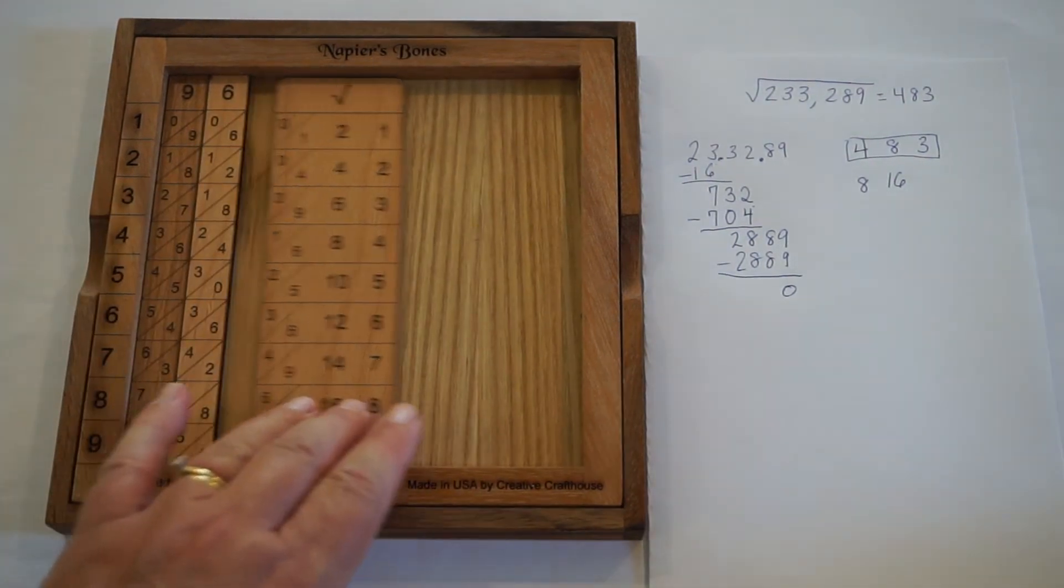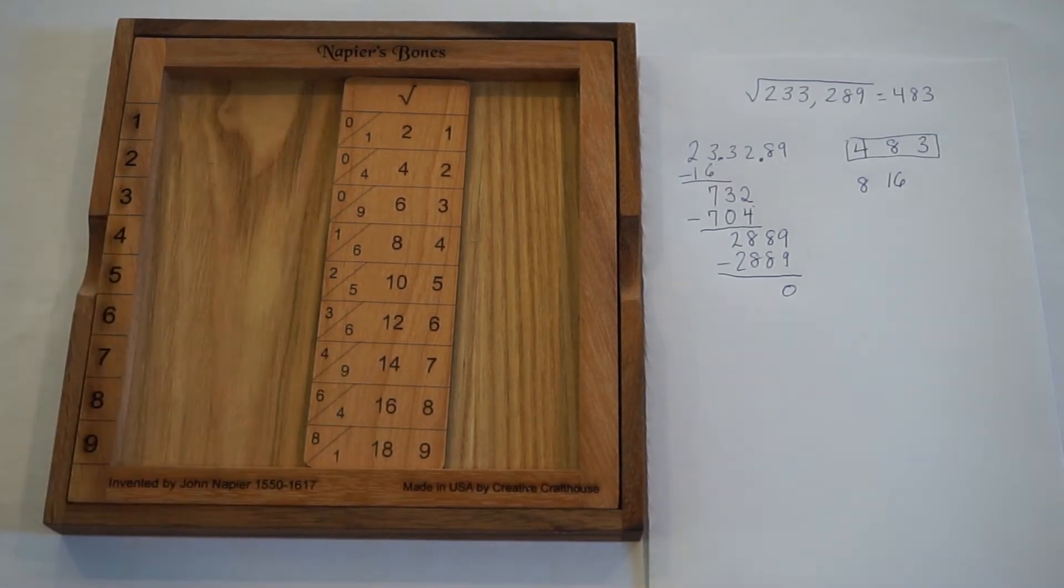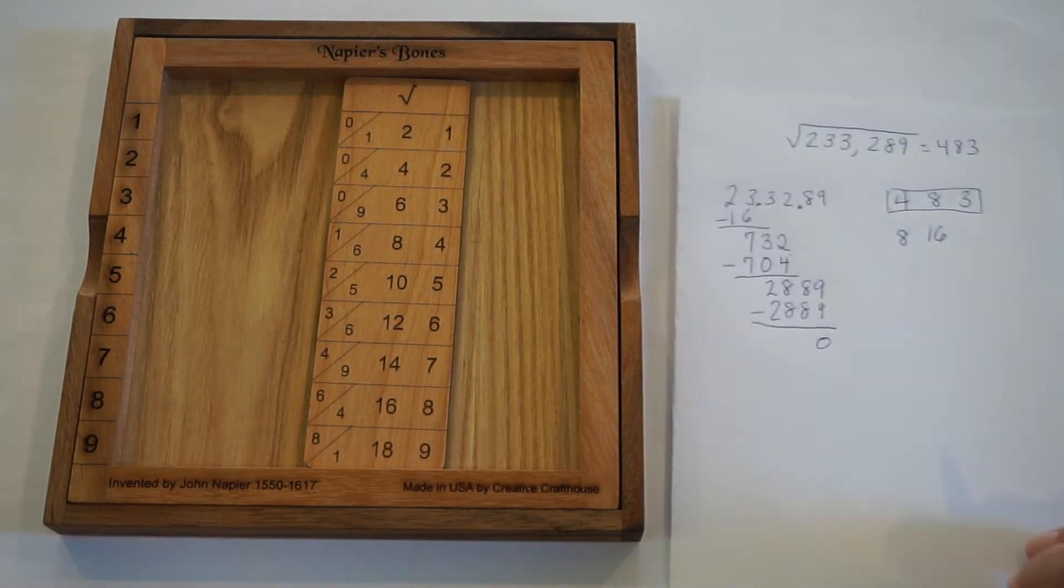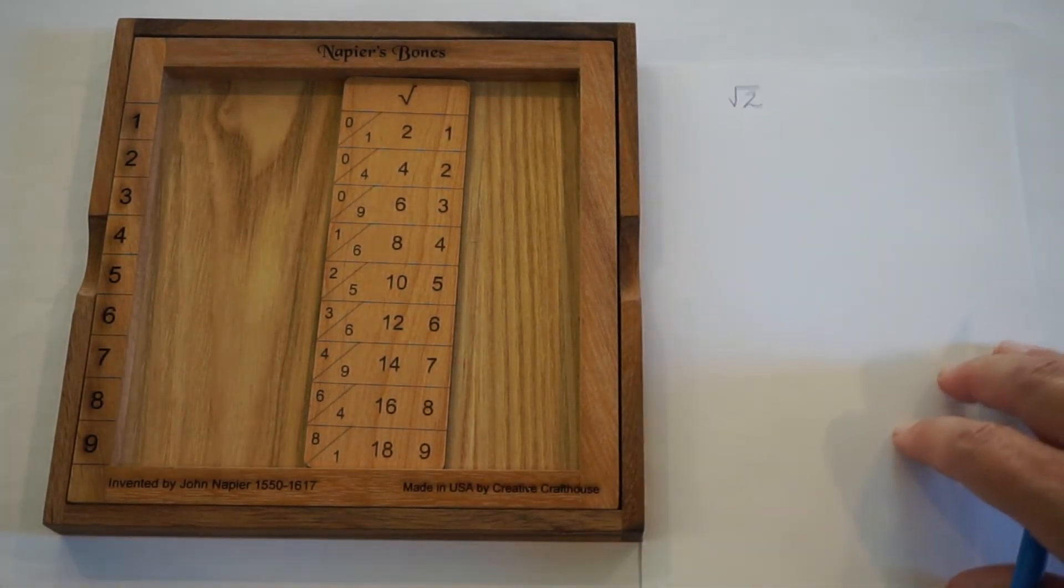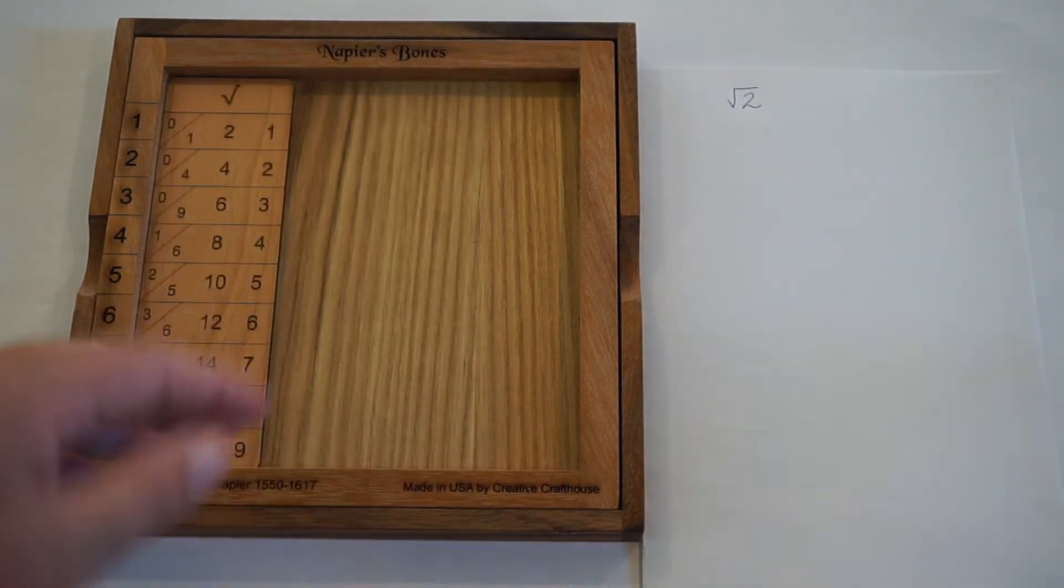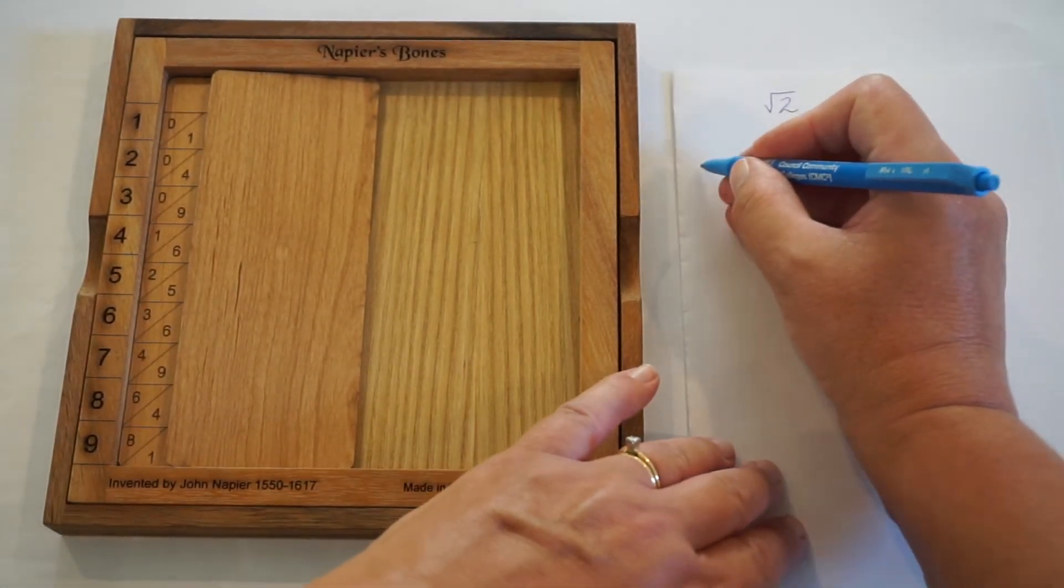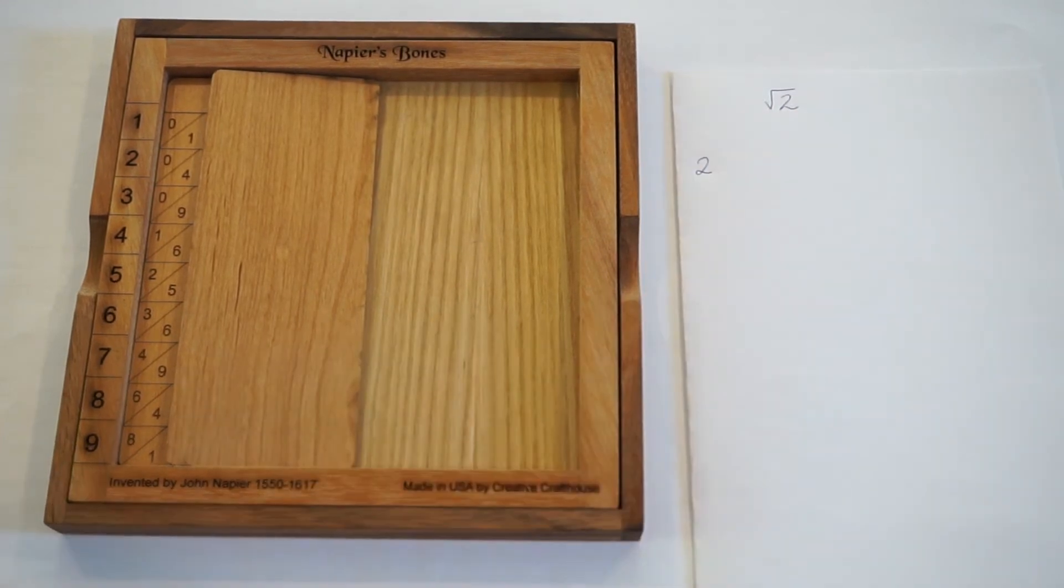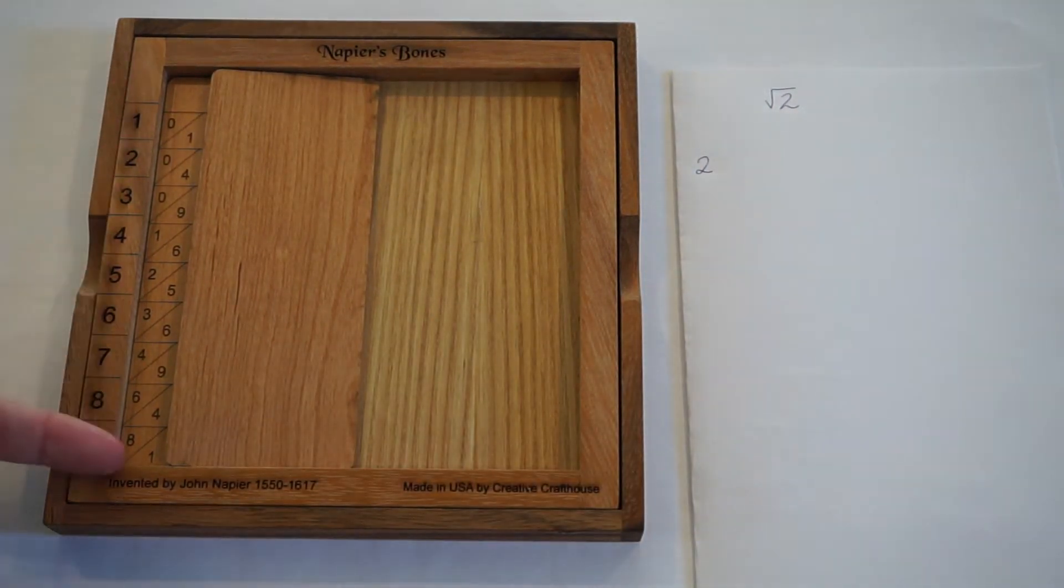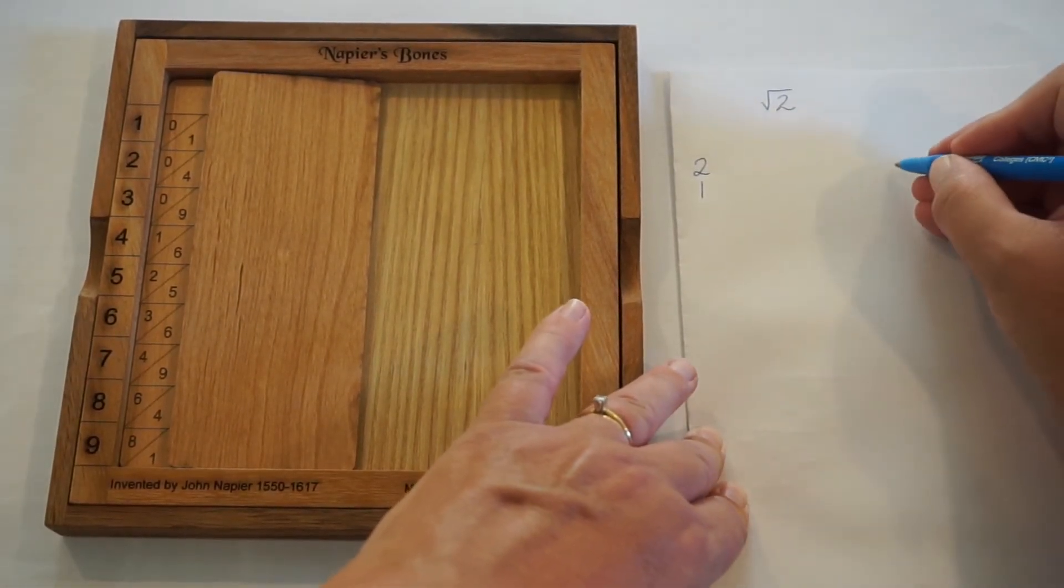And I'd like to do one more that gets into what happens if the number you started with isn't a perfect square. What if you need to get some decimal numbers? And our example there is simply going to be the square root of 2. So you start in the same way. I only have a single digit here. So I can't really get any doublets. I look for the closest thing without going over. It's going to be 1 squared is 1. And so the first part of our answer is 1.